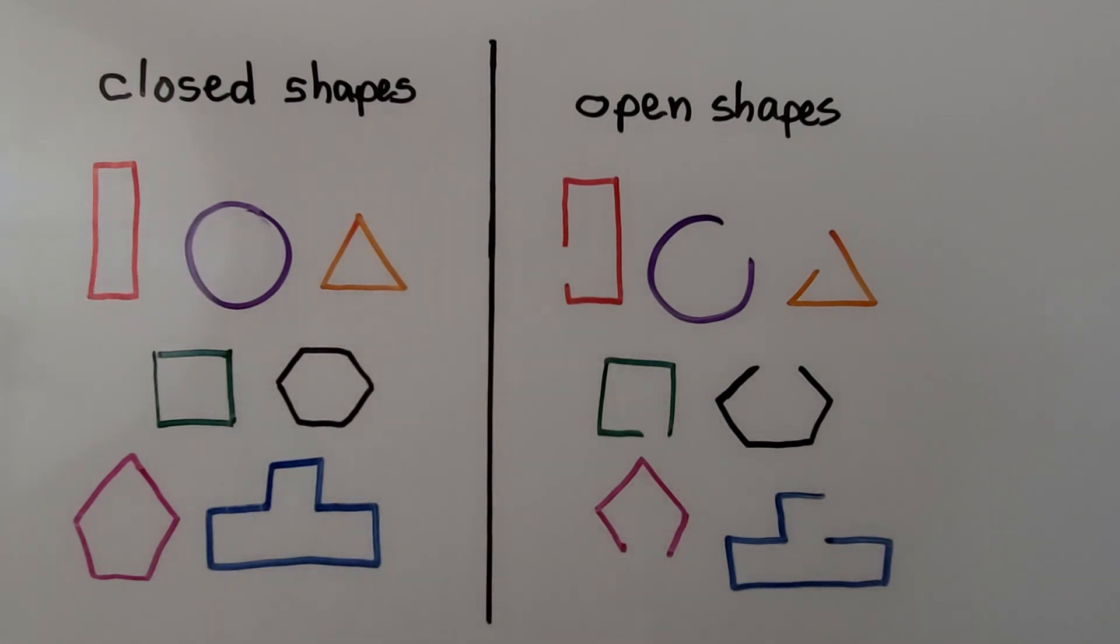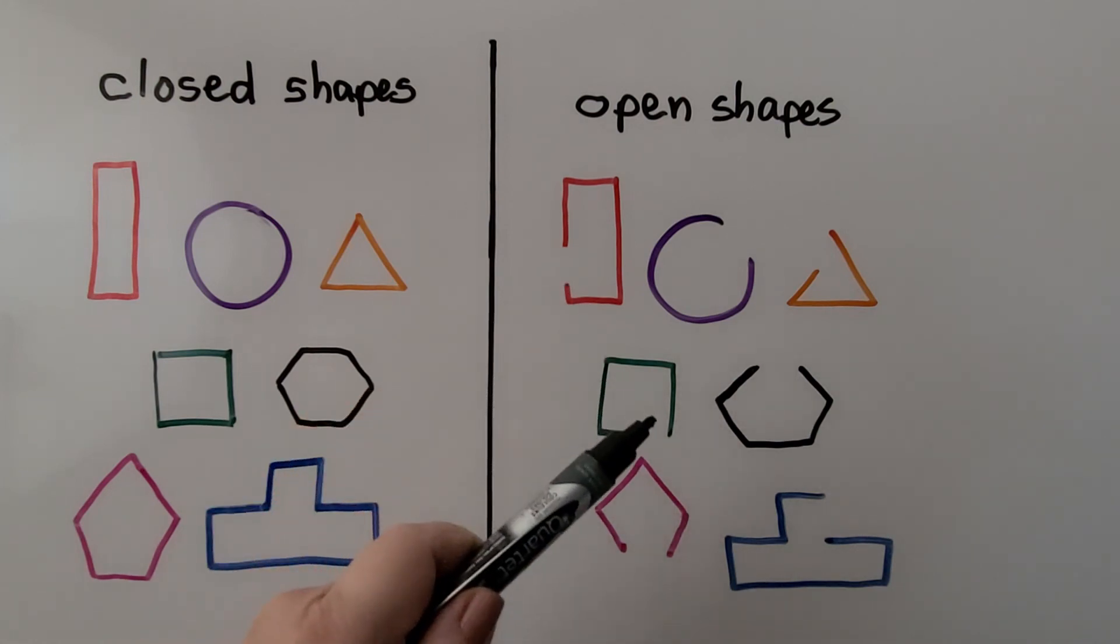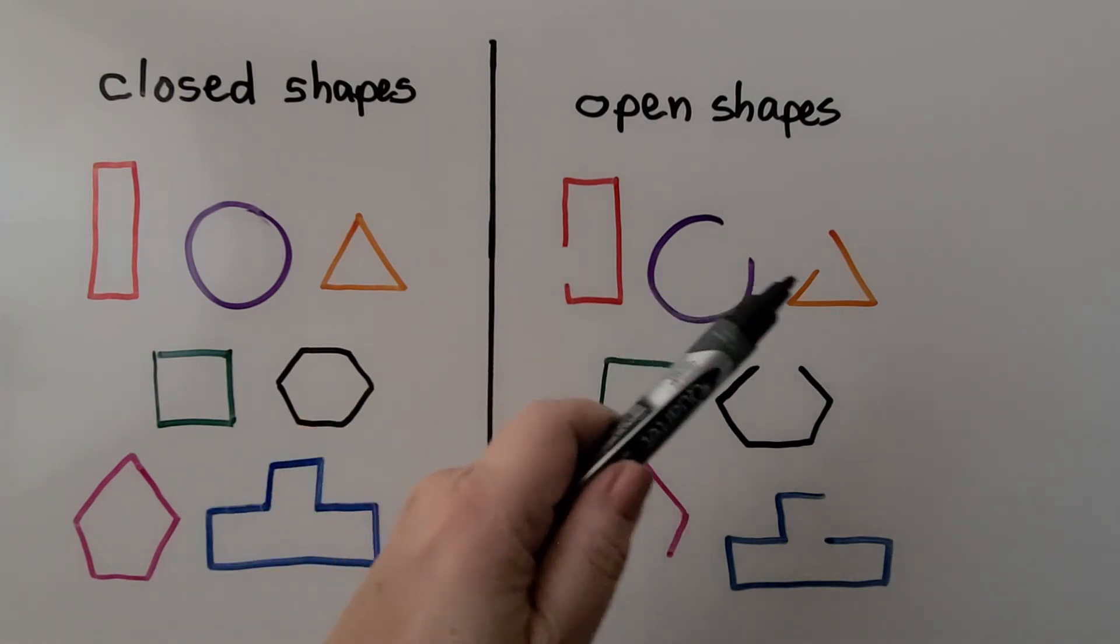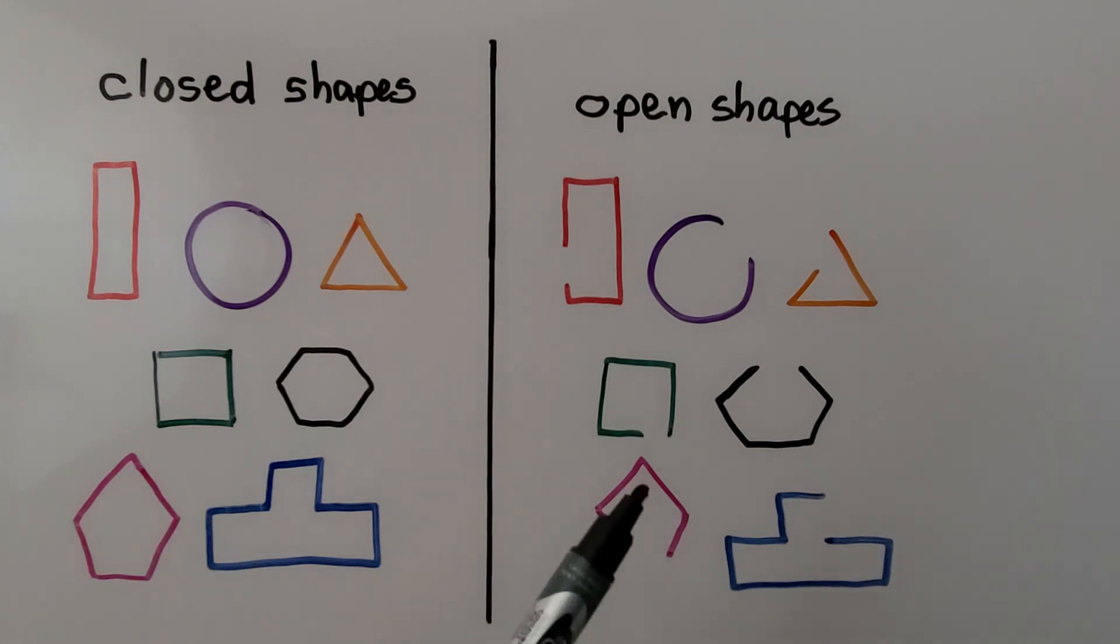And these are open shapes. We can see there's an opening. If we were inside, we would be able to get out. We'd be able to walk out of the opening. These are closed shapes. These are open shapes.